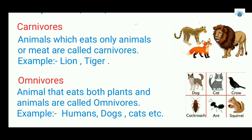Omnivorous animals that eat both plants as well as animals are called omnivorous. Examples of omnivorous are ants, humans, dogs, cats, etc. In this picture you can see another example of omnivorous.